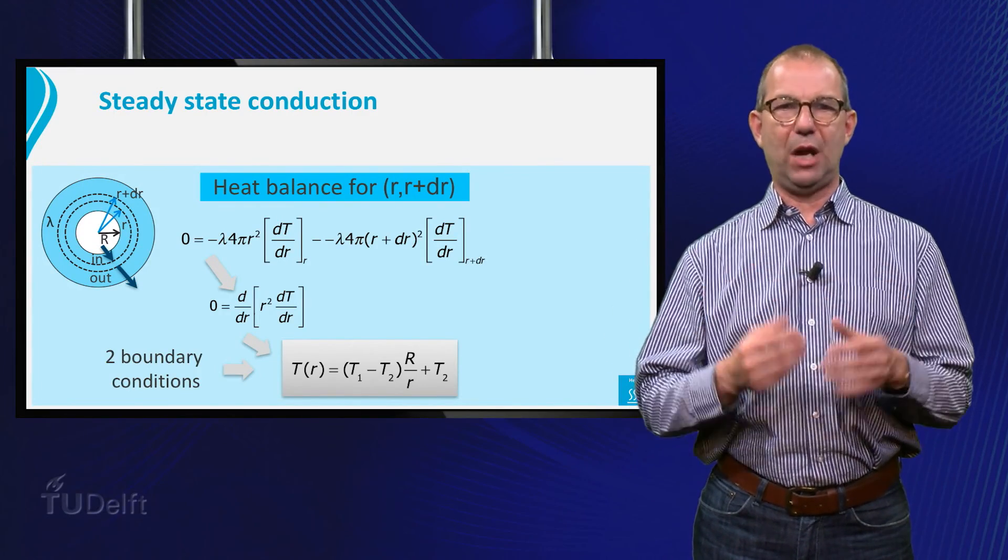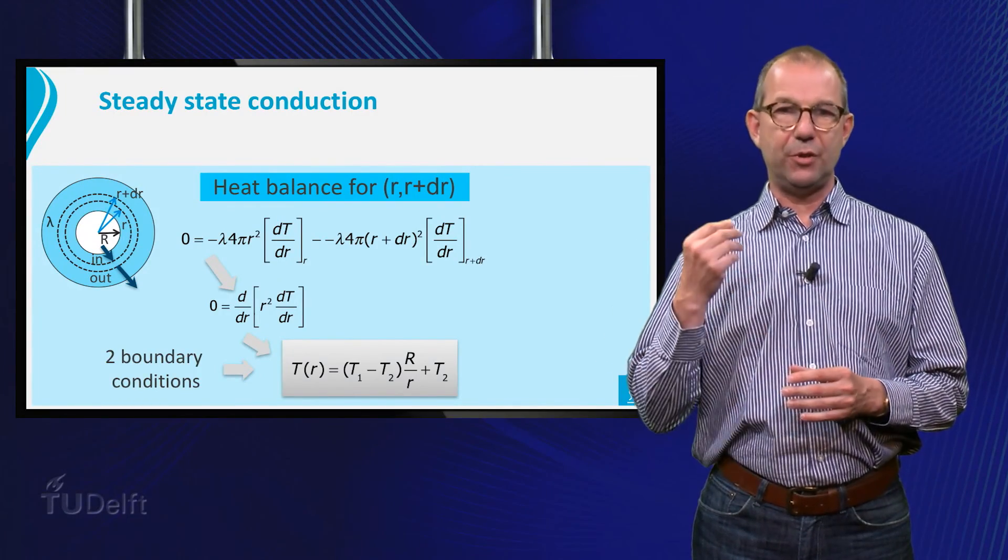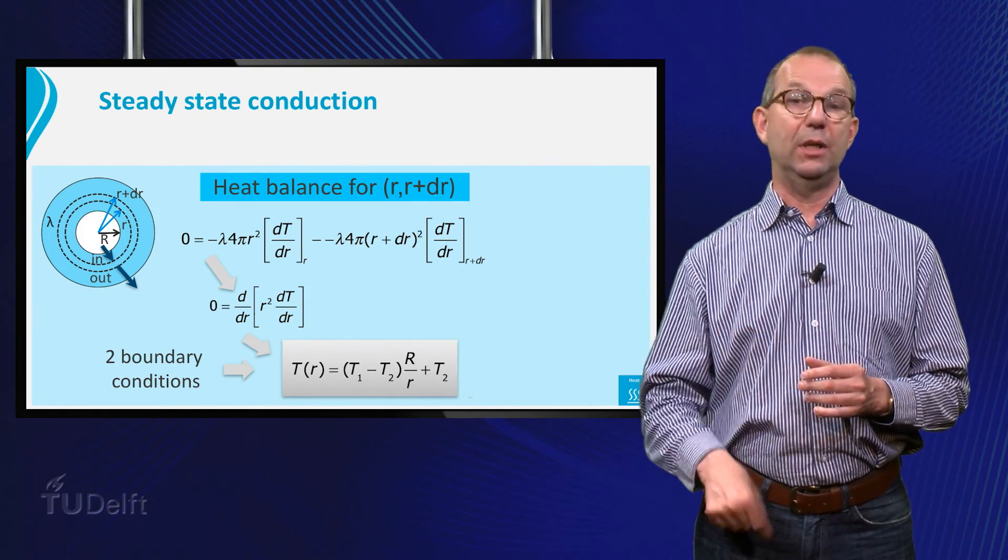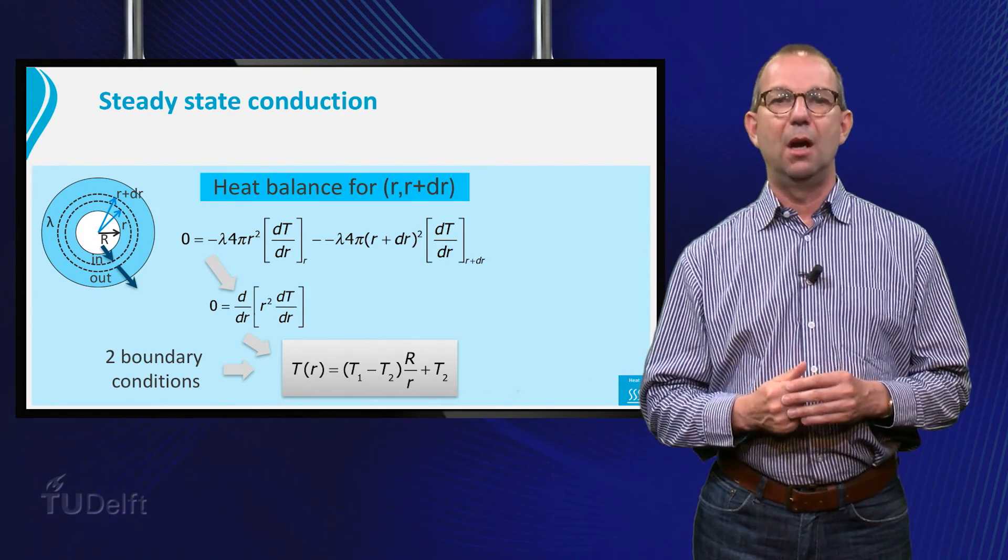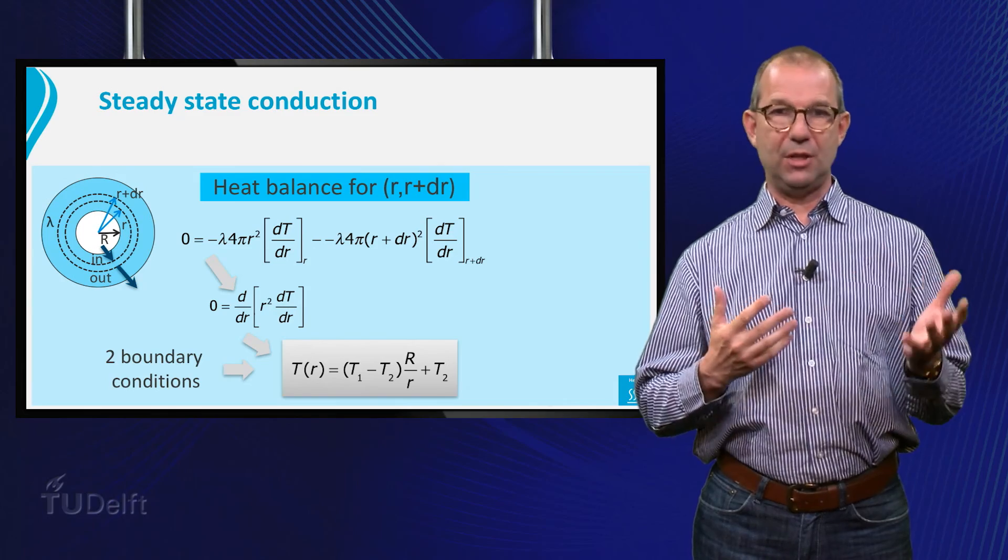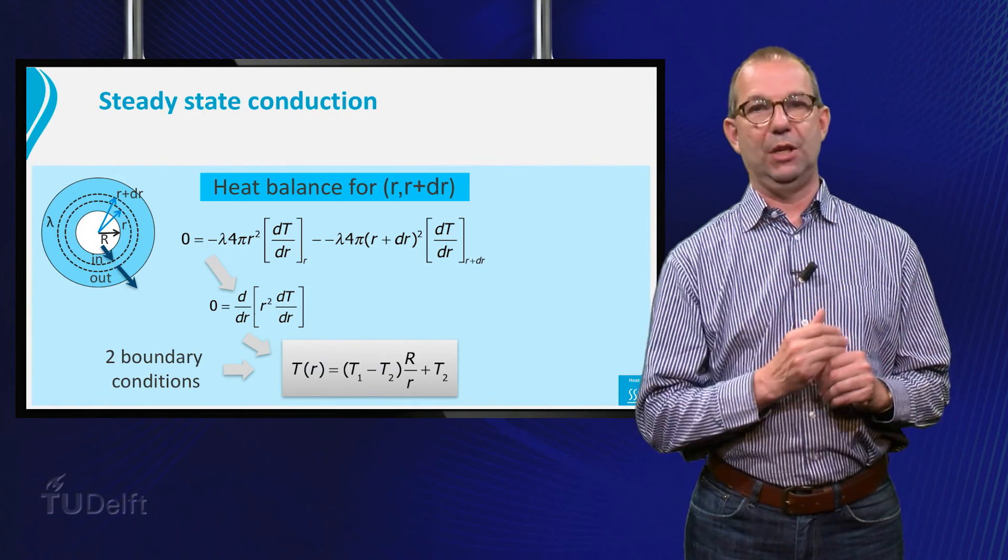For steady state conduction and diffusion this gives us an equation that we needed to integrate twice. Thus, we found two integration constants and had to use two boundary conditions.